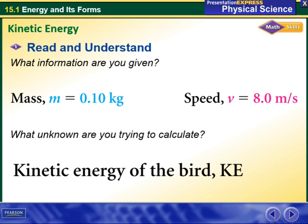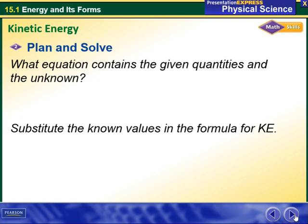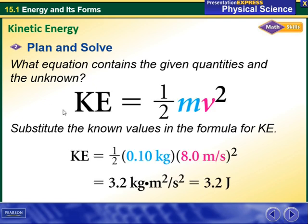The unknown we are trying to calculate is the kinetic energy of the bird, denoted as KE. We write down the formula: kinetic energy equals one-half times m times v squared, where m is the mass and v is the speed. Once we substitute the values into the formula and calculate, we write down the answer.